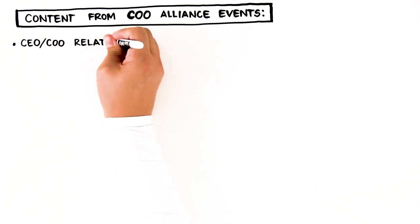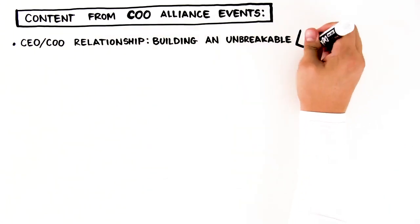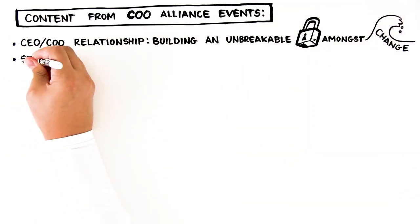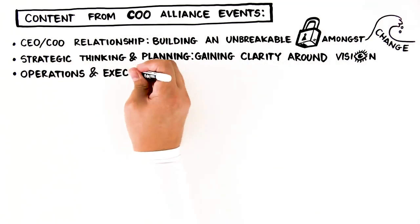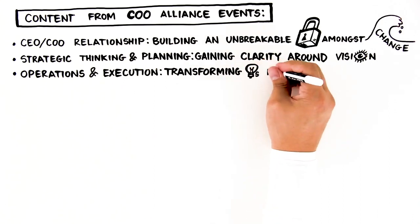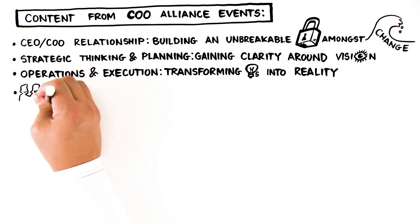The content from the COO Alliance events covers a variety of core topics: CEO-COO relationships, building an unbreakable bond amongst rapid change, strategic thinking and planning, and gaining clarity around vision, operations and execution, and transforming ideas into reality.